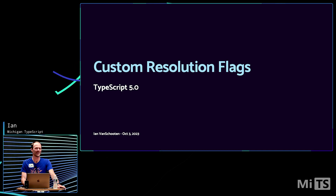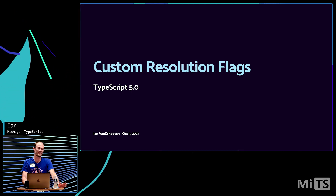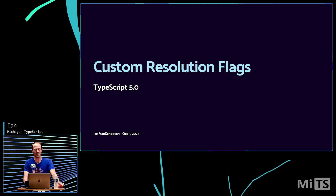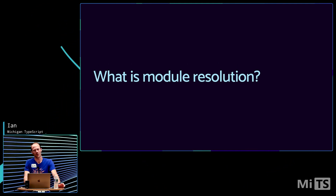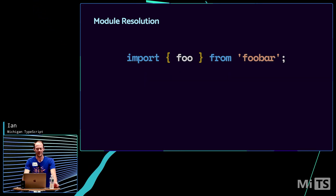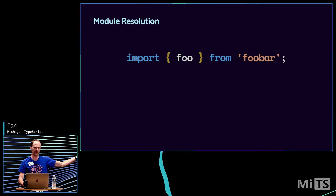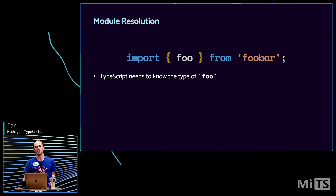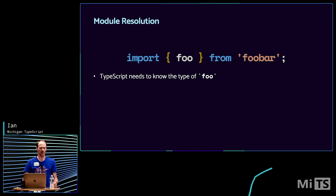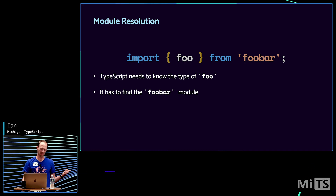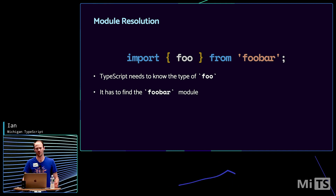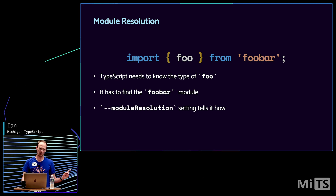Hi, everyone. I'm Ian. I'm here to talk about a change that was made in TypeScript 5.0: the added support for custom resolution flags. Starting off, what do we mean by module resolution? Assume you have an import like this, where you're importing foo from foobar. TypeScript needs to know what the type of foo is so that it can check your program and make sure you're using it correctly. In order to do that, it needs to find the foobar module. Depending on the module system you're using, there could be different rules for locating that and finding the types, and the module resolution setting is what tells it how to do that.